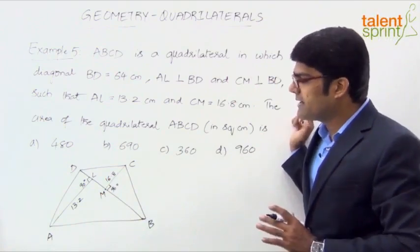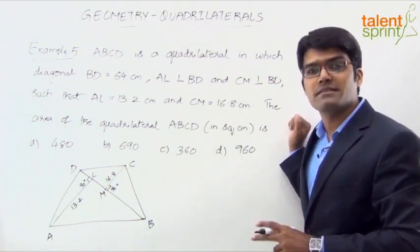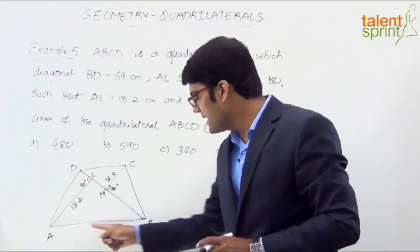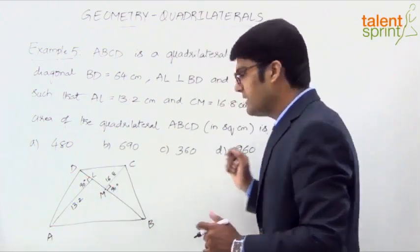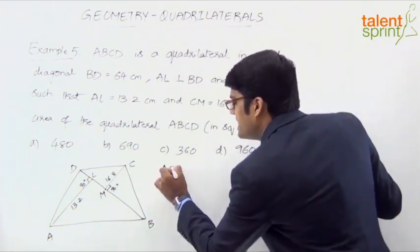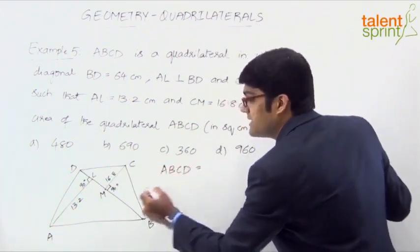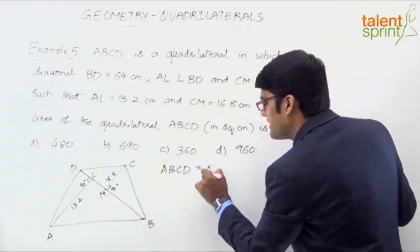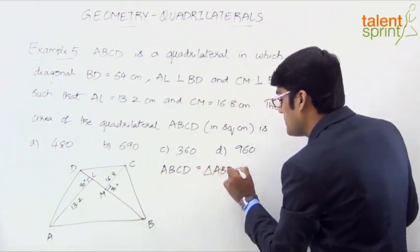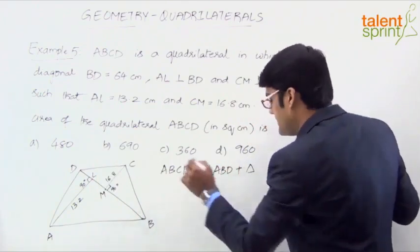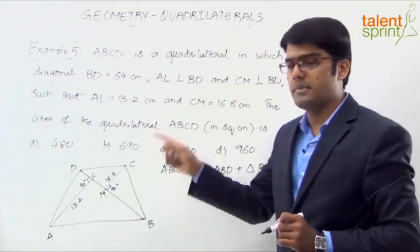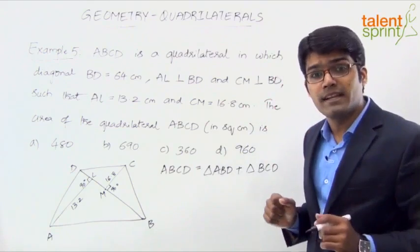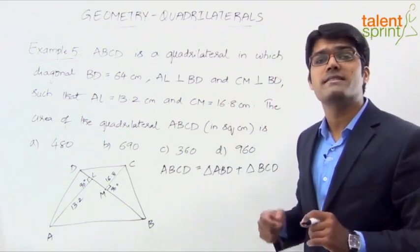Now if you really look at this quadrilateral ABCD it is divided into two halves. One is this triangle ABD and the other is the triangle BCD. So we can say the area of the quadrilateral ABCD is equal to area of triangle ABD plus the triangle BCD. Now you know how to get the area of a triangle. What is the area of a triangle? Half into base into height.